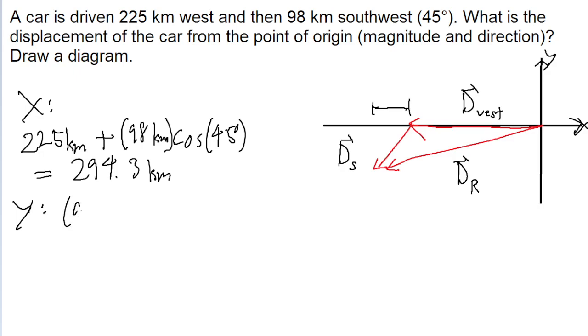And then for the angled, that's 98 kilometers times the sine of 45 degrees. And if you put that into a calculator, you get 69.3 kilometers.